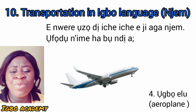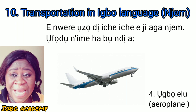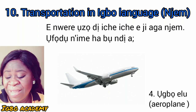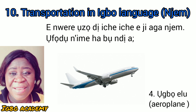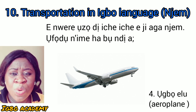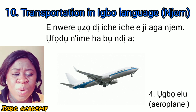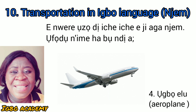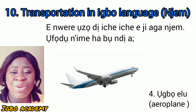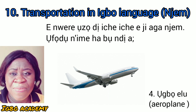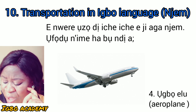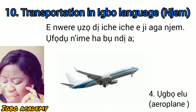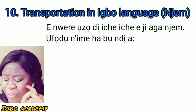Any means of transportation that flies in the water — it is what we call Uwamili. If it is a speed boat, if it is a top boat, any means of transportation that you get on the water, you call it Uwamili.